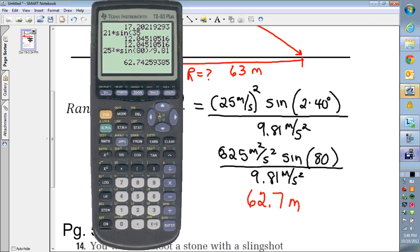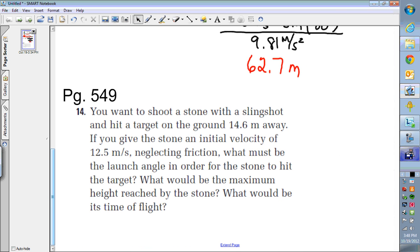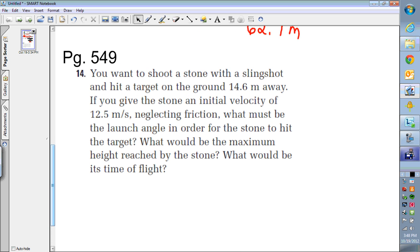Okay, so let's do a different example, because that's a pretty simple one. Let's find one that has a little bit more words to it. So in our textbook, page 549, question 14, says that you want to shoot a stone with a slingshot and you want to hit a target that's on the ground 14.6 meters away. If you give the stone an initial speed of 12.5 meters per second, neglecting friction, what would the launch angle need to be for that stone to hit the target? So that's the first part. A, what is the angle? B, what would the maximum height be reached? And C, how long would it be in the air? What's the time of flight?